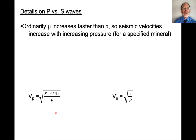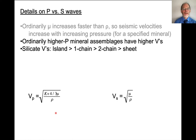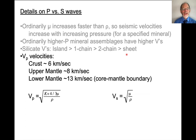Ordinarily, mu increases faster than rho, so commonly seismic velocities increase with increasing pressure for a particular mineral. It's also true that higher pressure mineral assemblages have higher velocities, so again increasing pressure will increase velocity. The different types of silicates also tend to have systematically different velocities: island silicates and orthosilicates tend to have higher velocity than single chain silicates such as pyroxenes, double chain silicates such as amphiboles, and sheet silicates such as micas.